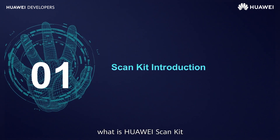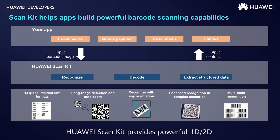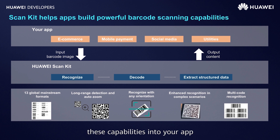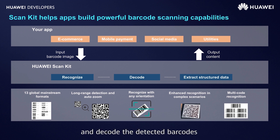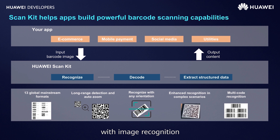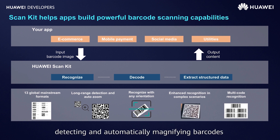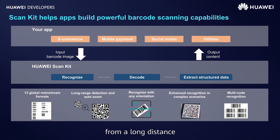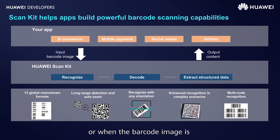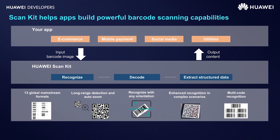What is Huawei ScanKit? Huawei ScanKit provides powerful 1D or 2D barcode scanning capabilities. You can use the Scan SDK to quickly and easily integrate these capabilities into your app. After the integration, Huawei ScanKit will identify and decode the detected barcodes to complete the scanning process. Thanks to Huawei's ample experience with image recognition, ScanKit is capable of identifying 13 different types of barcodes, detecting and automatically magnifying barcodes from a long distance, and accurately scanning barcodes in challenging scenarios such as under bright lighting or when the barcode image is damaged or distorted. All these capabilities contribute to improved scanning success rates and a better user experience.